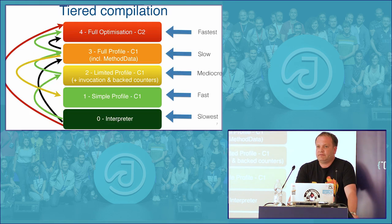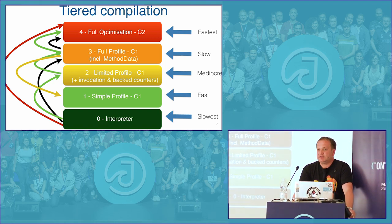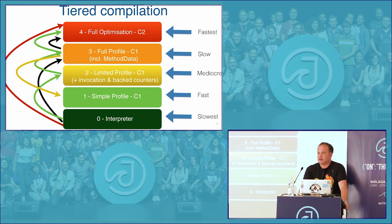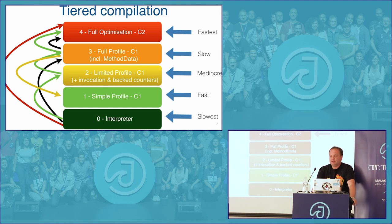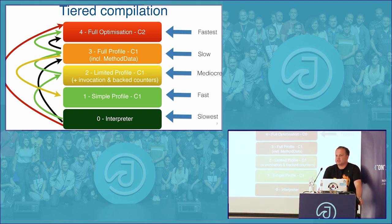There are five tiers that exist in HotSpot. At the bottom you have the interpreter, and at the top you have the C2 compiler — slowly being replaced by the Graal compiler, but for now C2 is the default. There are three tiers in between. Given that the interpreter is the slowest and C2 produces the highest-throughput code, you might think they're numbered by throughput, but in reality they're numbered in reverse — by the amount of produced machine code or the complexity built into those compilations.